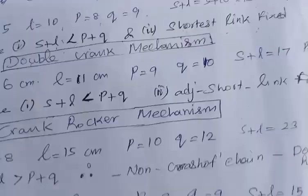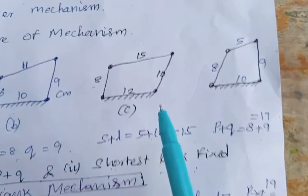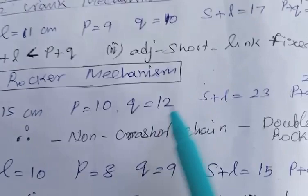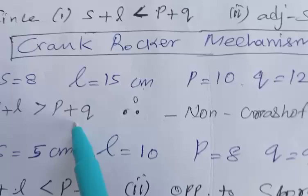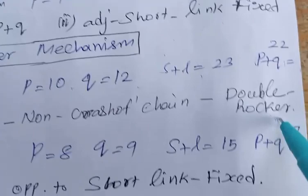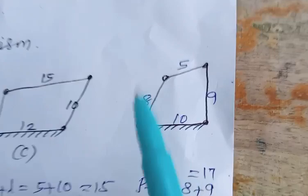For figure C with link lengths 12, 8, 15, and 10 cm: shortest = 8, longest = 15, P = 10, Q = 12. S + L = 23, P + Q = 22. Since S + L > P + Q, it does not satisfy Grashof's law — this is a non-Grashof chain — therefore the mechanism is a double rocker mechanism.